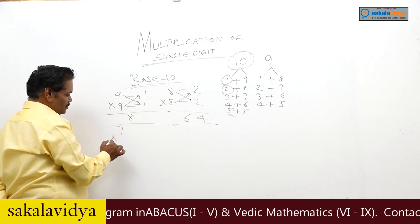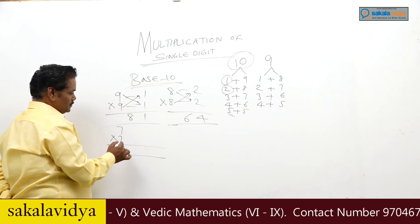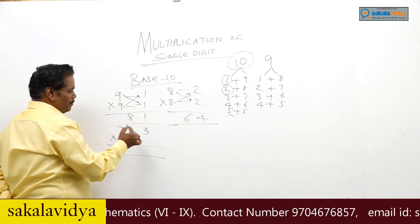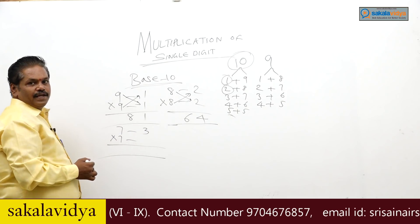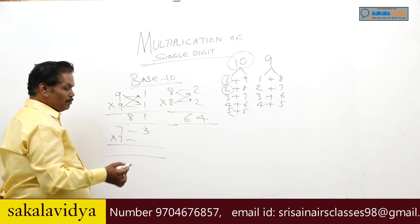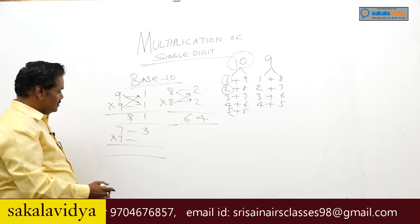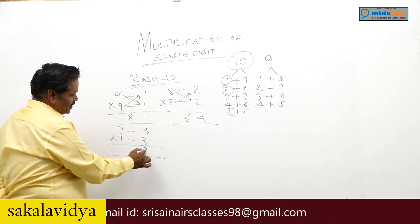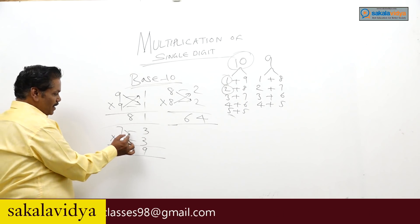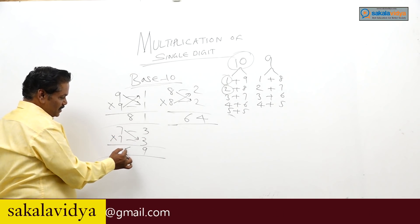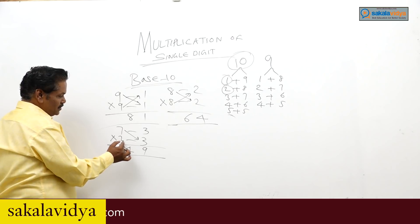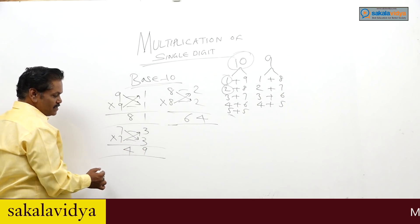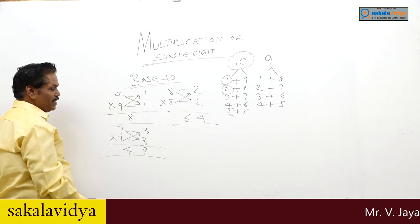7 into 7: complement of 7 is 3, and again complement of 7 is 3. 3 into 3 is 9. 7 minus 3 is 4. So 7 into 7 is 49.